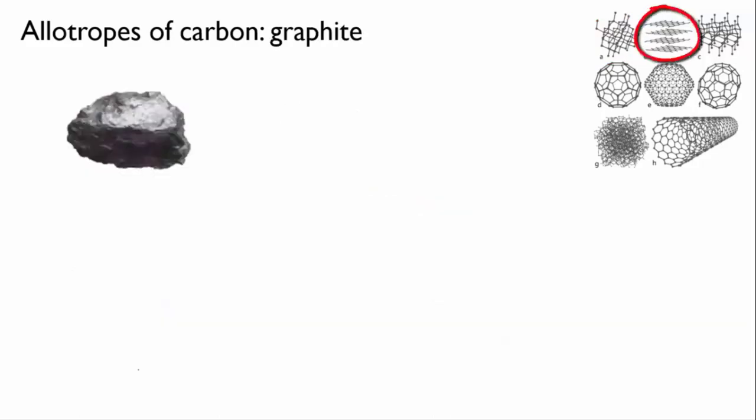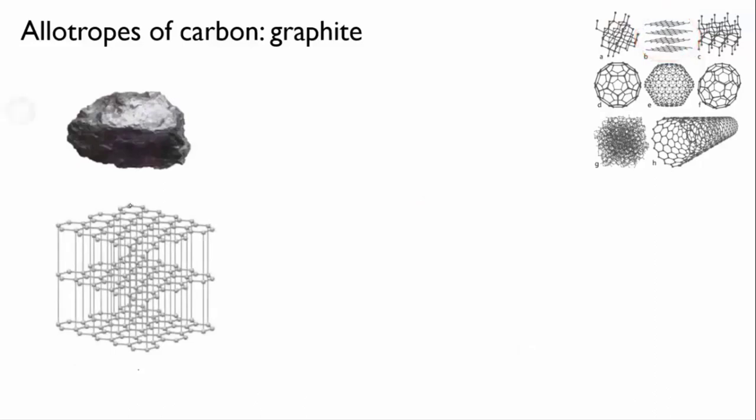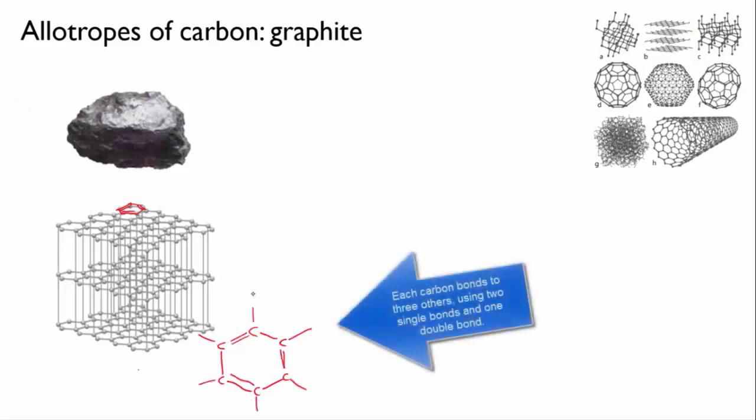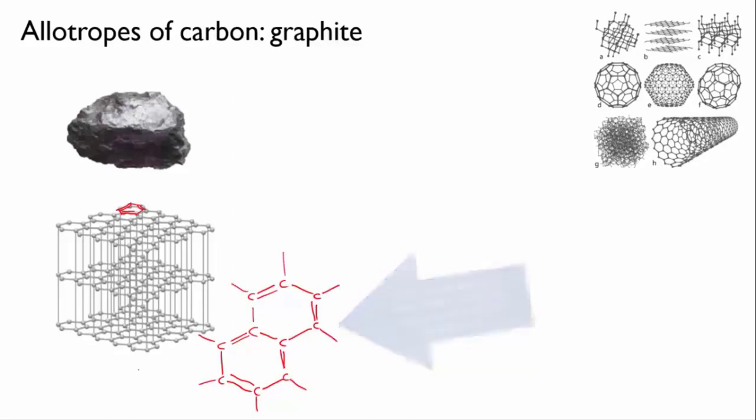Graphite is another well-known allotrope of carbon, and it has a more complex structure. The bonding in graphite is a bit like the bonding in ethene. Each carbon atom bonds to three other carbon atoms using two single bonds and one double bond. The result of this is a continuous lattice of flat hexagons with alternating single and double bonds.